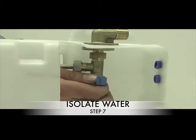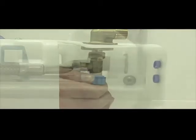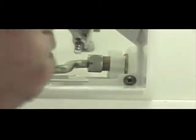Step 7: Isolate your water at the isolation valve. Step 8: Remove your flexible connector from the inlet valve only.